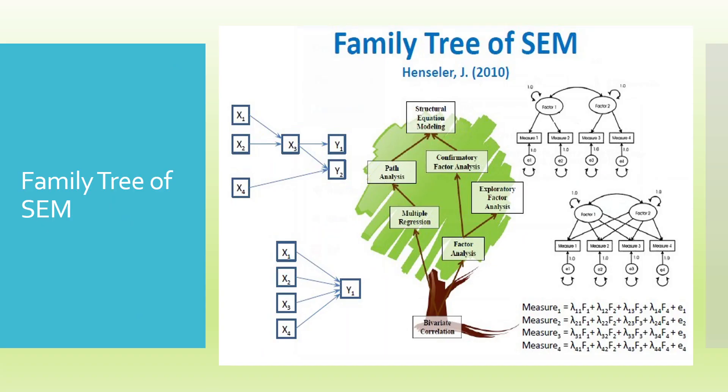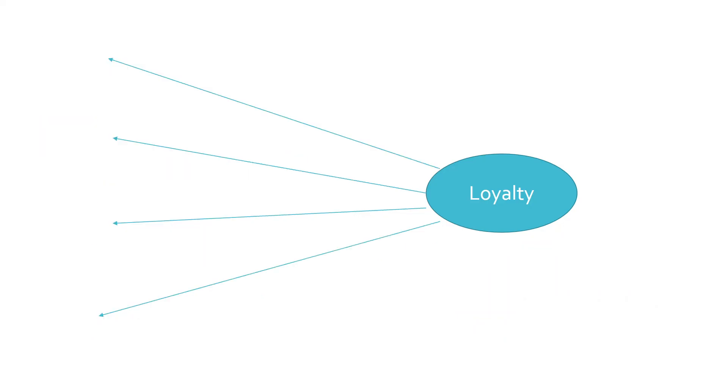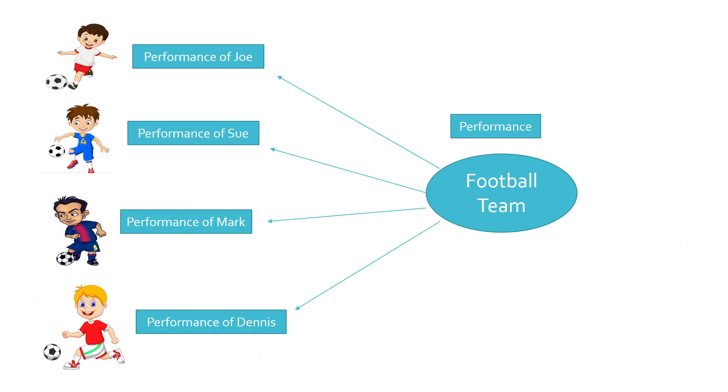Now, according to Hansler, the family tree consists of structural equation modeling, path analysis, confirmatory factor, exploratory, multiple regression. But according to him, the root is bivariate correlation. There should be some correlation existing among these statements, then only we will be able to run structural equation modeling.